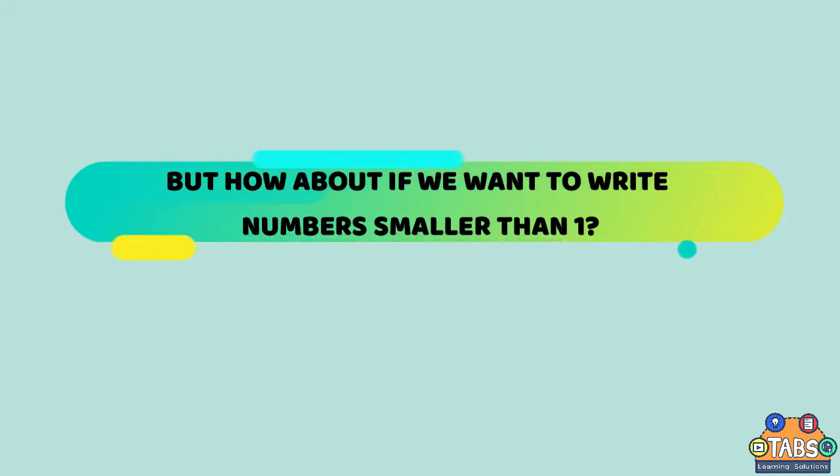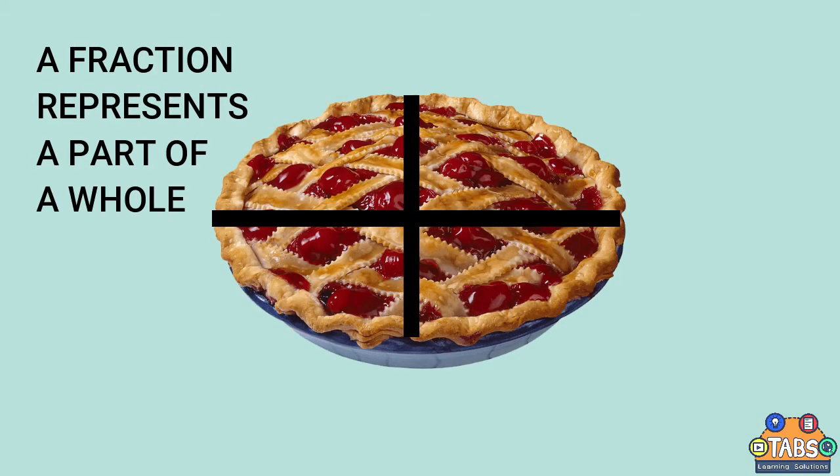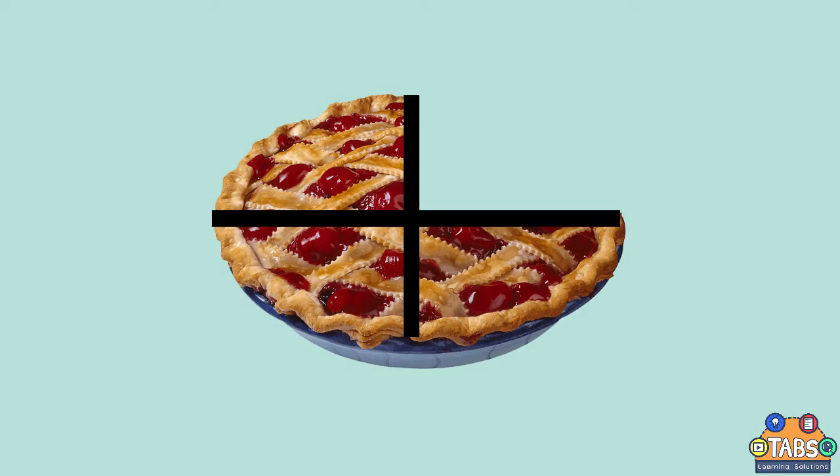Let me show you a pie divided into 4 pieces. A fraction represents a part of a whole. For example, one part has been eaten. Now the pie is 3 fourths in fraction.